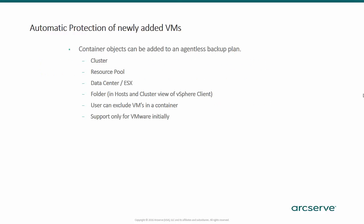New in UDP 6.5, users can automatically protect newly added VMs. They can protect a single container object such as a resource pool in the vSphere hierarchy. As a result, new VMs added in the container object are protected automatically. This feature is applicable to VMware VM backup only at this time.